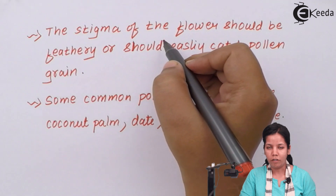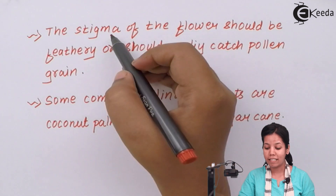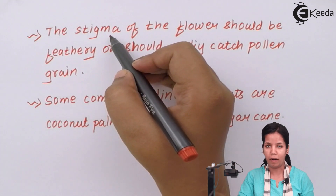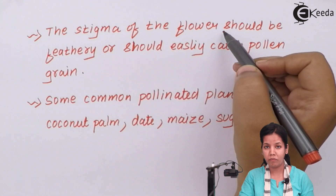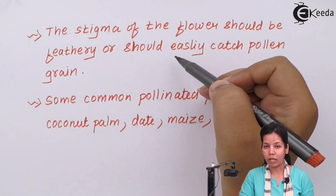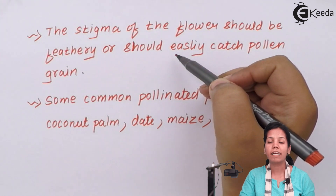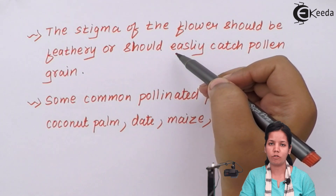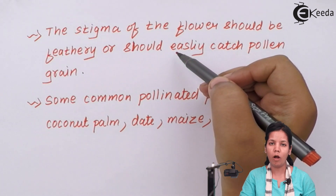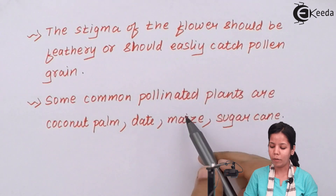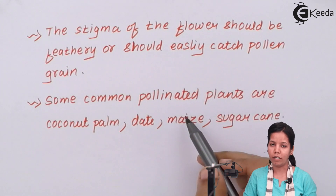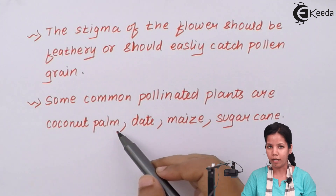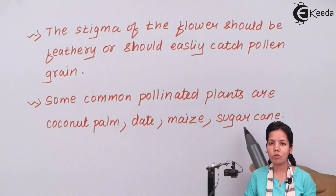For wind pollination or anemophily, the stigma — the female part — has to be feathery, so it should be easily able to catch the pollen grain. For this, it produces a sugary substance which helps in the interaction of pollen grains with the stigma and the passage through which the pollen grains travel. Some common examples of anemophily-pollinated plants are coconut, plum, date, mace, and sugarcane.